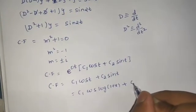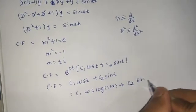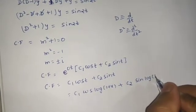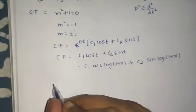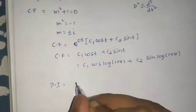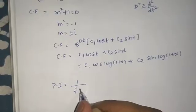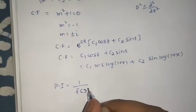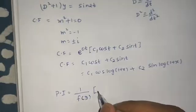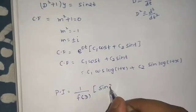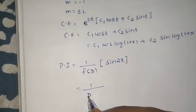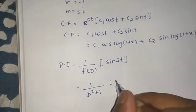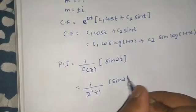Now moving on to the particular integral, which is 1/f(d) and this will operate on whatever is on the right hand side, which is sin(2t). So 1/f(d), here f(d) is d² + 1, operating on sin(2t).